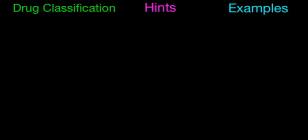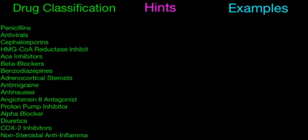The three different areas that we're going to cover today are the drug classifications, the hints, and we'll give you a quick example of what it means so you can put it all together. The drug classifications are going to be your penicillins, your antivirals, your cephalosporins, and all these ones — these are your major drug classifications.